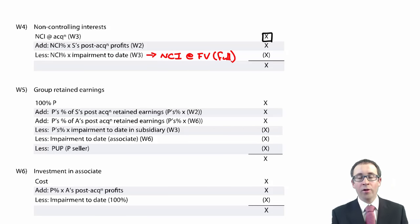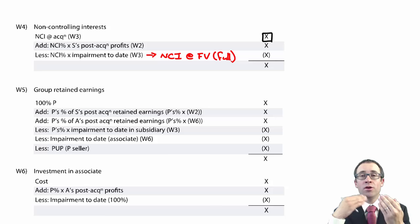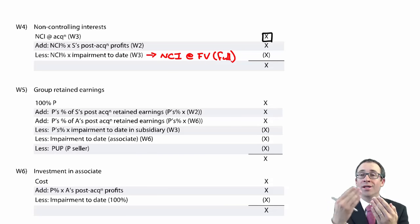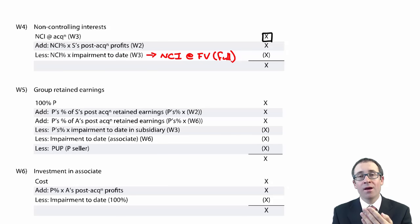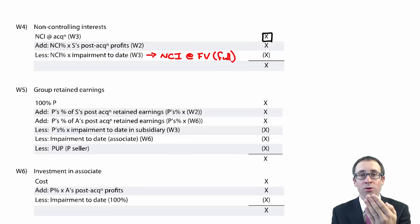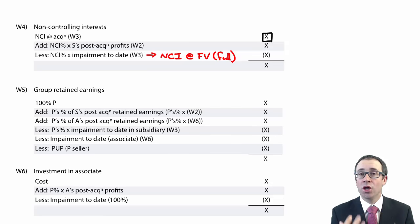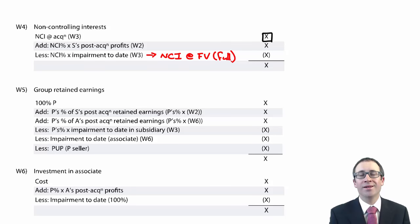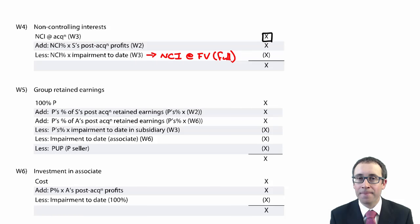If you're using the full goodwill method, the goodwill represents both the controlling and non-controlling interest share, so if the goodwill has been impaired you give the NCI their share. If you've used the proportionate share of net assets method to value the NCI, the goodwill is just the parent's share, so there is no reason to allocate any impairment to the NCI. Most of the time — 99% — the NCI is based on the full goodwill method at fair value.